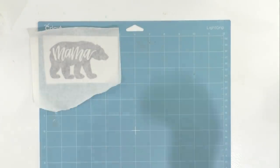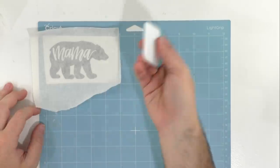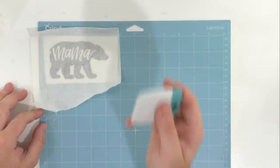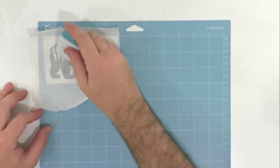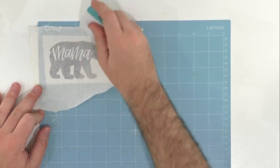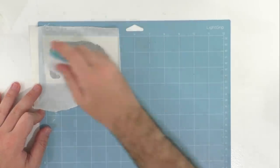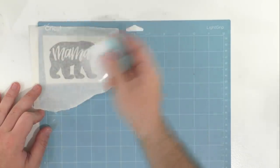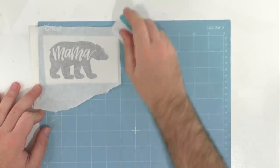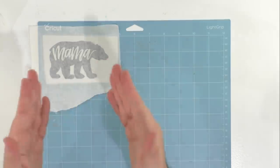Next up you want to make sure you burnish more than you think. This is a great tip for when you are going to take it from the backing sheet and when you're applying it to whatever surface you're going to put your decal on.